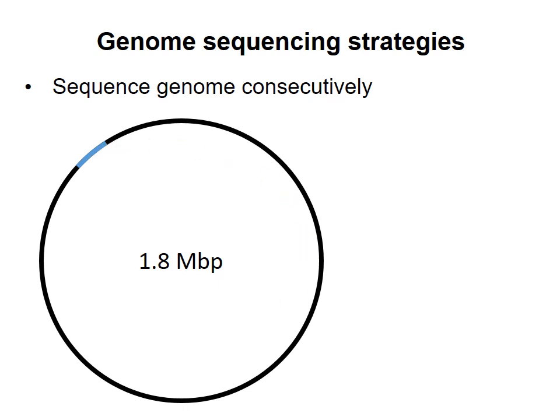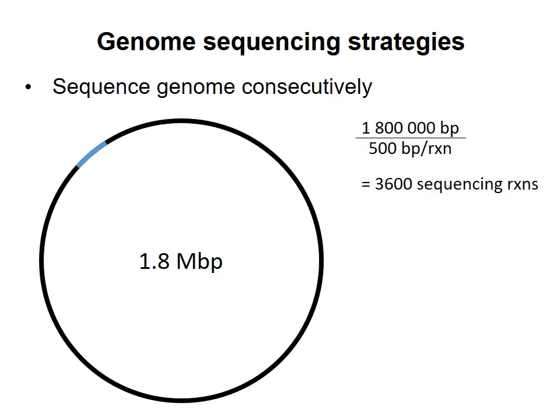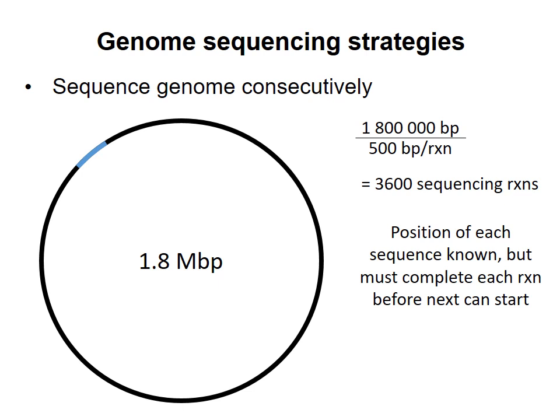With a genome of 1.8 million base pairs, you would need to do about 3,600 sequencing runs to get the whole genome. The advantage of this method is that at each step you would know where the sequenced fragments fit in the genome. But to sequence any particular point, you'd need to wait for the preceding sequences first, which would take a long time. Sequencing in both directions from the starting point, and assuming one sequencing run and one primer synthesis per day, it would still take about five years working seven days per week to obtain the entire sequence.